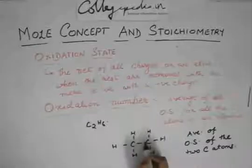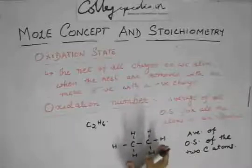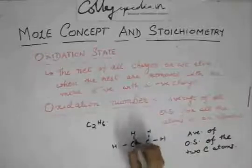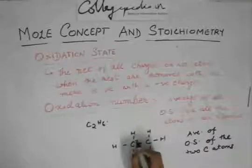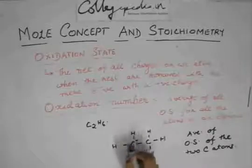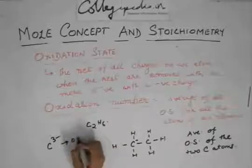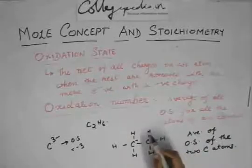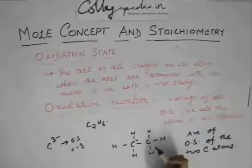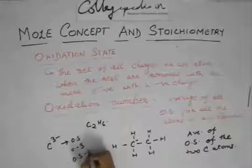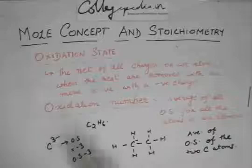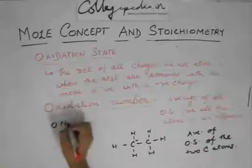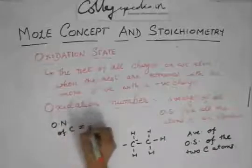Here, if you break the C-C bond, no one gets a negative or positive charge because C and C have the same electronegativity. So from C-C, each carbon gets 0. When you break C-H, H takes the plus charge and C gets the minus charge. So with 3 hydrogens, C gets 3 minus charge, giving an oxidation state of minus 3. Similarly, the other C also has oxidation state of minus 3. The average of minus 3 and minus 3 is minus 3, so the oxidation number of C in C2H6 is minus 3.